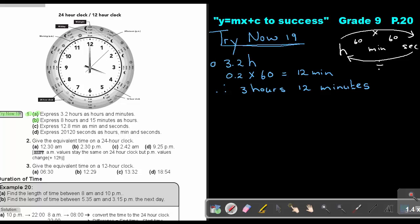The next one, this was number A. Number B. Express 8 hours and 15 minutes as hours. So it's 8 hours and 15 minutes. I must go from minutes back to hours. So what will I do? I will divide by 60. So I will say 15 divide by 60 and that will be 0.25 hours. And then I will just add the 8. So then it will give me 8.25 hours.